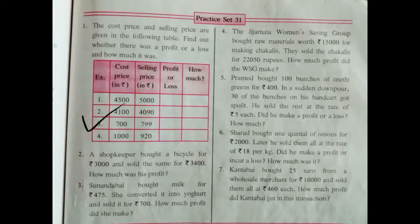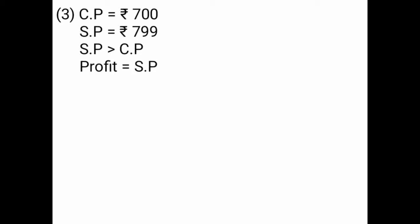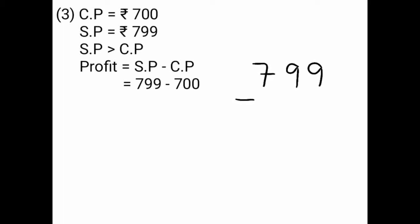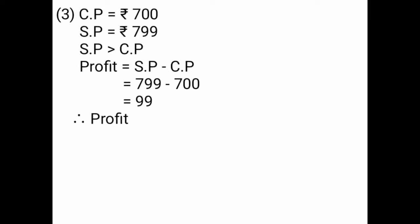Next, cost price is given Rs. 700, selling price is given Rs. 799. Cost price is equal to Rs. 700, selling price is equal to Rs. 799. Selling price is greater than cost price, so you have to find profit. The formula of profit is selling price minus cost price, that is Rs. 799 minus Rs. 700. I have subtracted and the answer is Rs. 99. Therefore, profit is equal to Rs. 99.